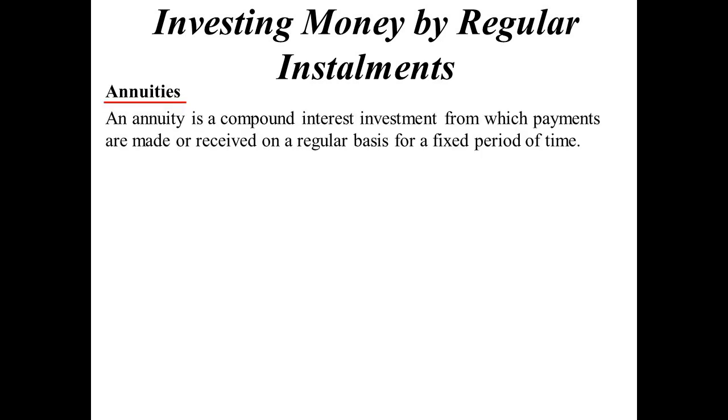All right, let's have a look at the situation of investing money by regular amounts. I'll introduce this term called an annuity. An annuity is a compound interest investment, and so payments are made or received on a regular basis for a fixed amount of time. Now, there's two types of annuities.